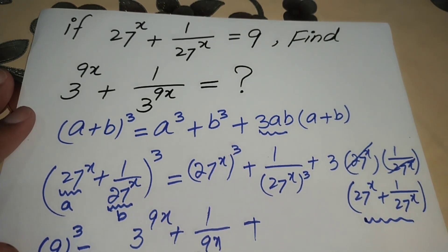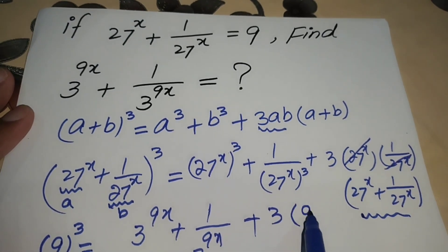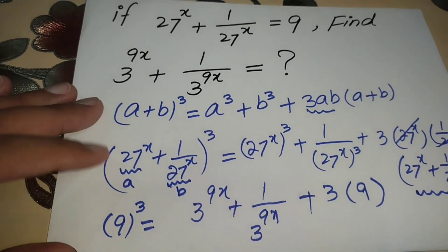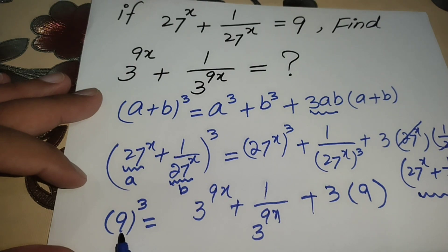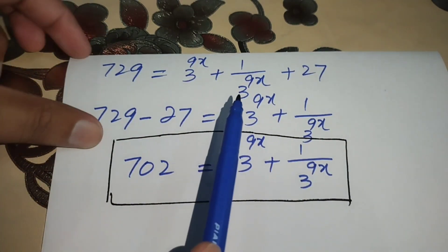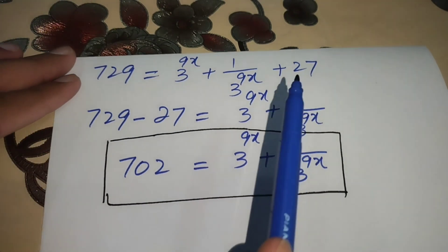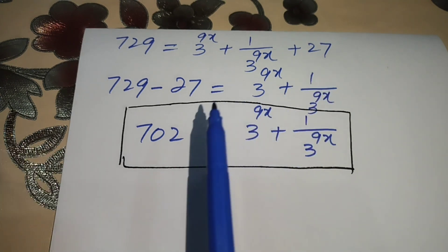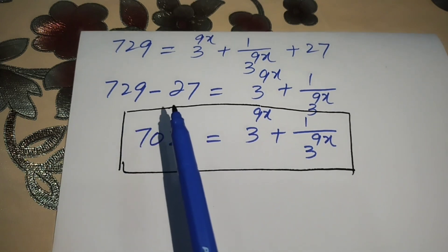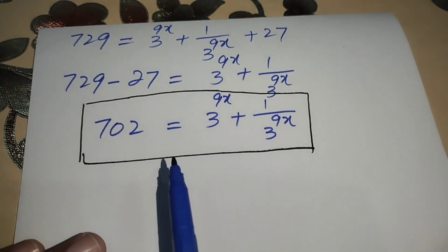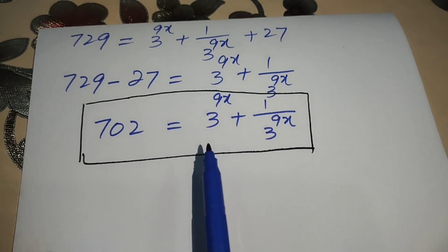Substituting, we get 9 × 3 for the 3ab term, which gives 27. The value of 9³ is 729. Moving 27 from the right side to the left gives minus 27. So 729 minus 27 equals 702. This is our final answer. Thank you so much for watching.